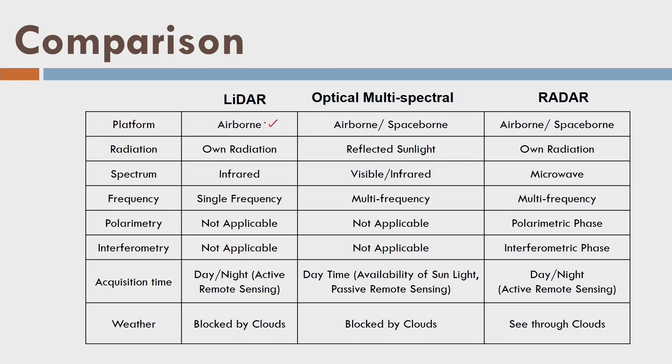One technique is LIDAR, one is photogrammetry or multispectral (photogrammetry has 3 bands: R, B, and G — red, blue, and green; other bands are also possible), and now we have radar. Comparing them: LIDAR offers only an airborne platform, while photogrammetry and radar offer both spaceborne and airborne platforms. I will only indicate the important aspects of radar in comparison.